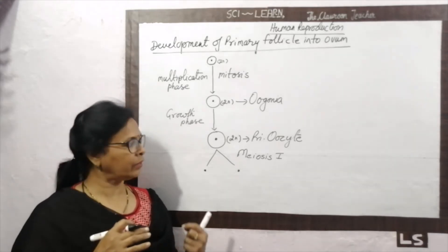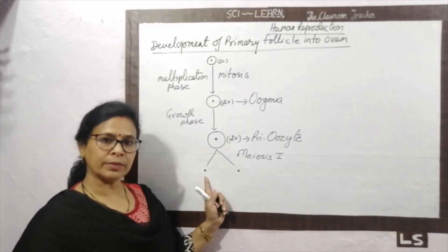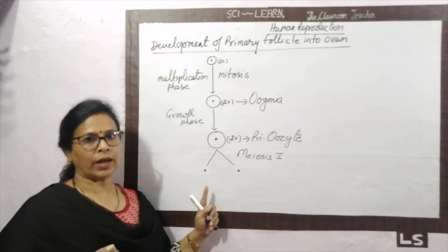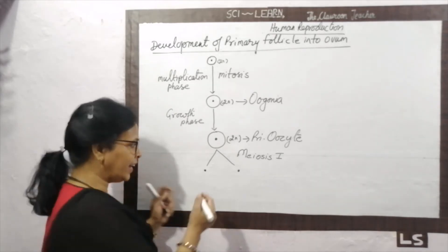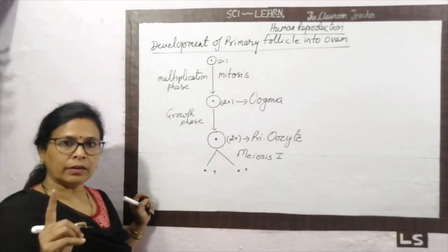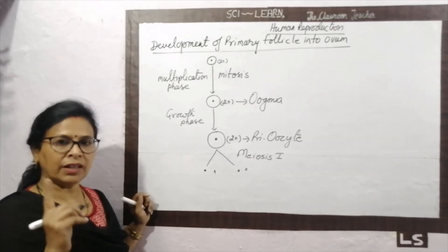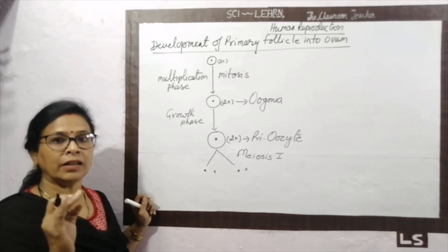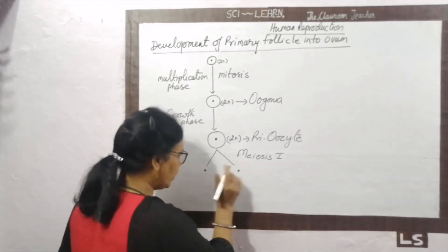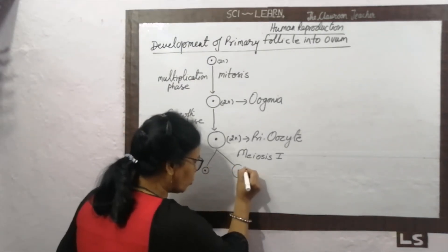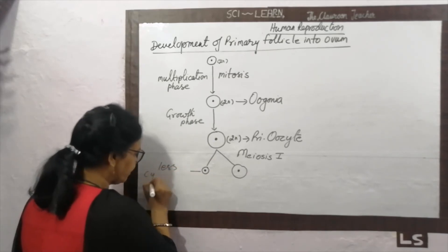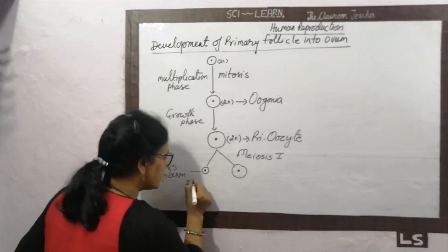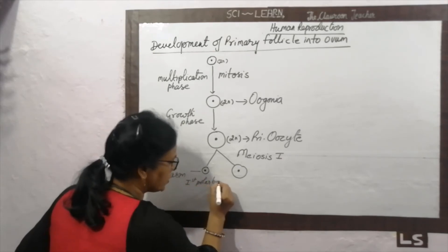After meiosis 1, two nuclei are formed — both N in nature. In cytokinesis, only one nucleus is destined for egg development, so it needs more nutrients. Therefore, the cytoplasmic division is unequal. The smaller cell with less cytoplasm does not participate in further development and is called the first polar body.